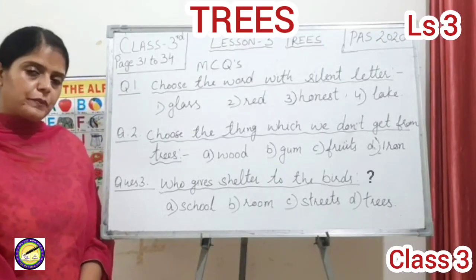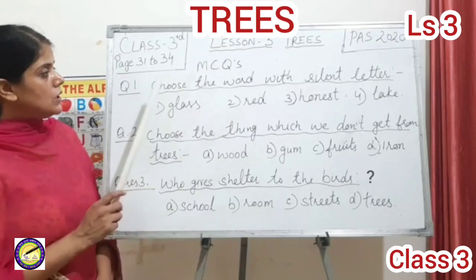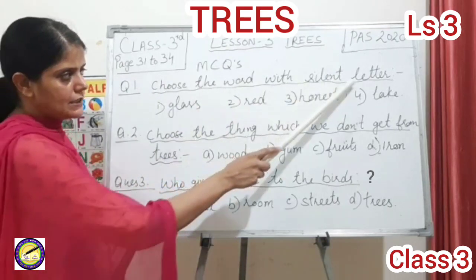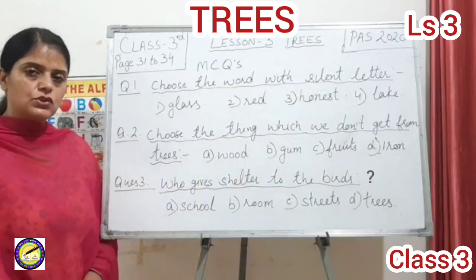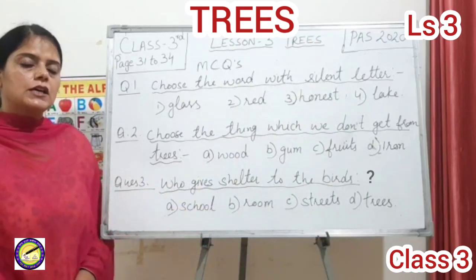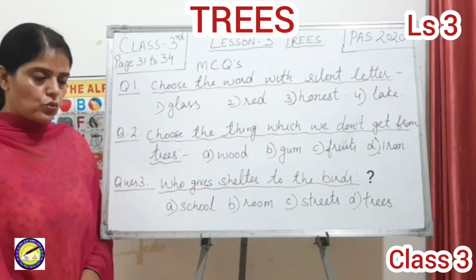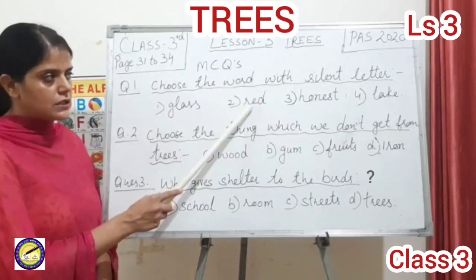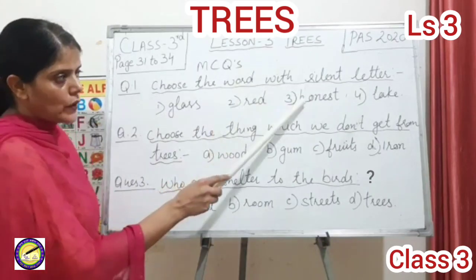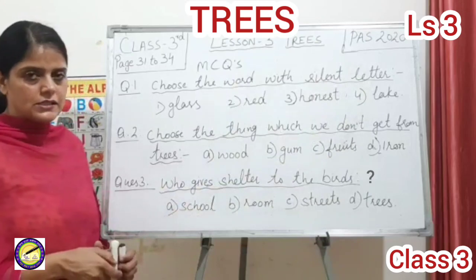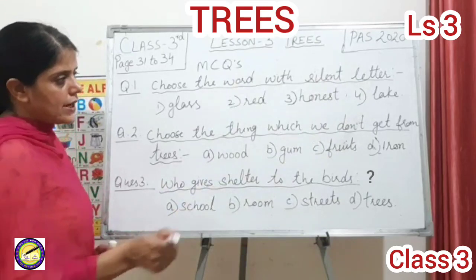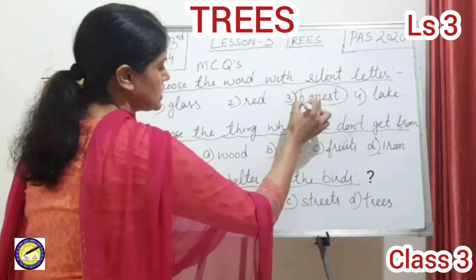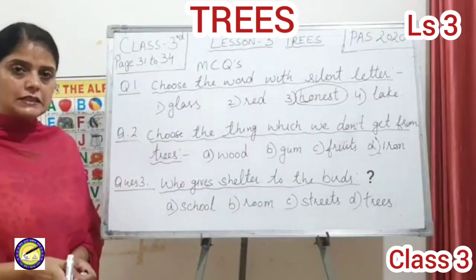I will now discuss some multiple choice questions for the preparation of the Punjab Achievement Survey. The first question is: choose the word with a silent letter. Options are gas, red, honest, and lake. In 'honest', H doesn't produce a sound, so this is the word with a silent letter.